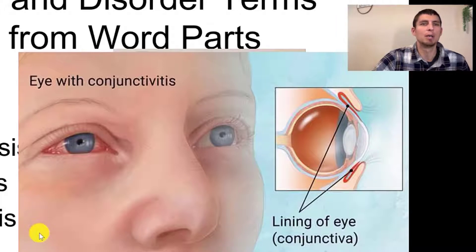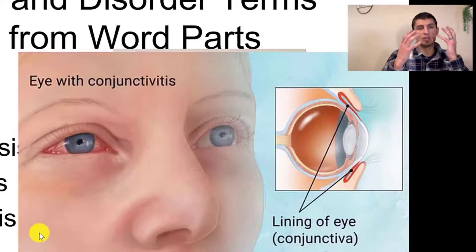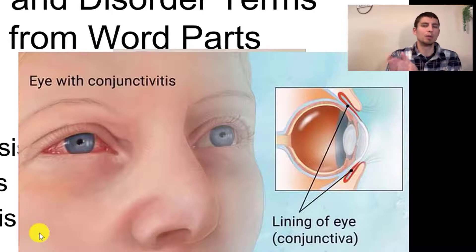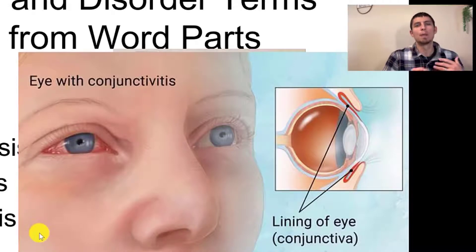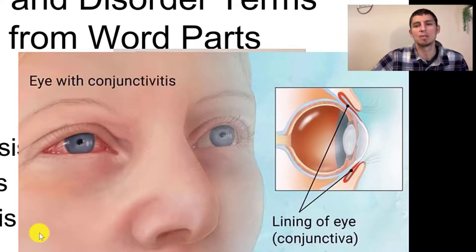Conjunctivitis is really common in preschools and elementary schools, because kids will get some type of pathogen on their hands, then they're constantly touching their face and rubbing their eyes. They don't clean their hands, then touch another child or a toy the infected child had touched. That child touches their eyes, and soon everybody in the daycare has pink eye because they're spreading the infection via contact with hands and face.